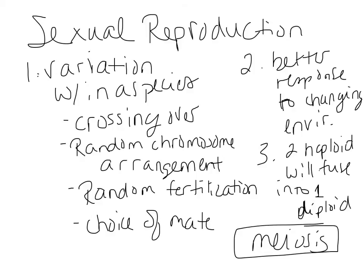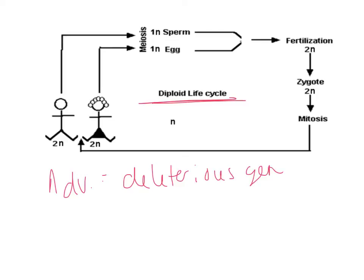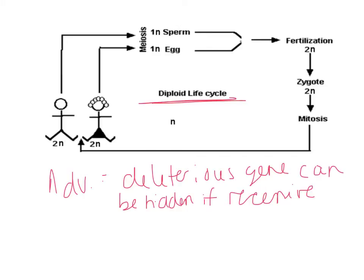Sexual reproduction leads to diploid cells. One of the advantages of having diploid cells is that there are two sets of the genes, so genes that are bad or harmful — especially if they're recessive — can be masked. They don't necessarily have to be expressed and won't necessarily cause harm to the organism that has them.